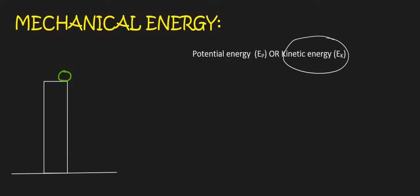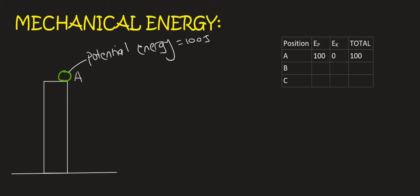Potential energy is the energy an object has due to its height. So if this object is not moving, then it has potential energy. Let's say that the potential energy is 100 joules. Okay, so that object has 100 joules. Let's call this position A. It's got 100 joules of potential, 0 kinetic, and so the total is 100.